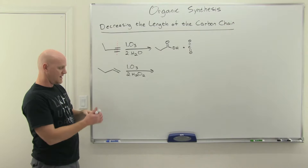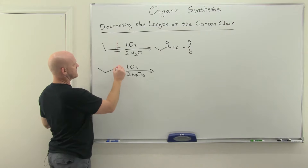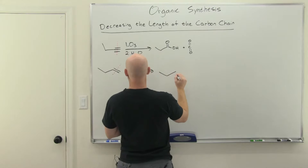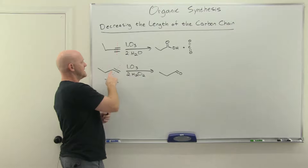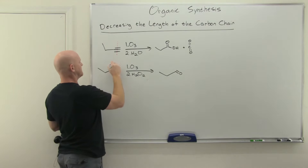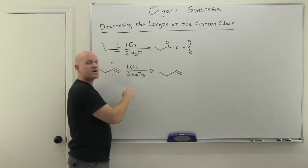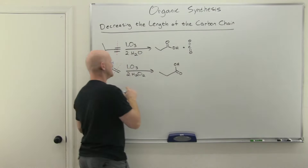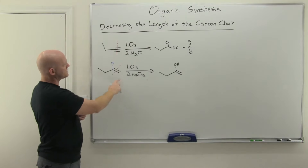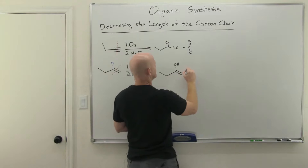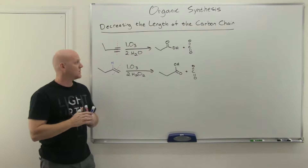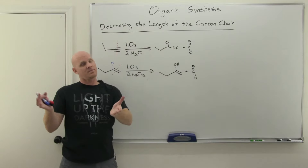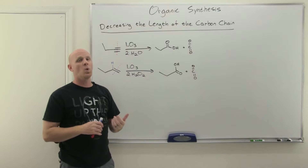The same thing works with a terminal alkene using ozonolysis under oxidizing conditions with hydrogen peroxide — you cleave the carbon-carbon double bond. The terminal carbon side initially forms an aldehyde, but under oxidizing conditions aldehydes get oxidized to carboxylic acids, and the terminal single carbon becomes carbon dioxide. In both cases, a four-carbon chain is shortened to a three-carbon carboxylic acid — the length of the carbon chain decreases by one.